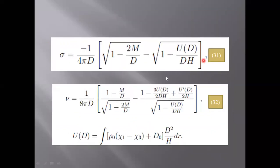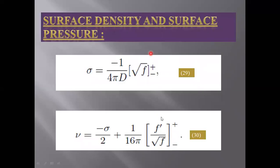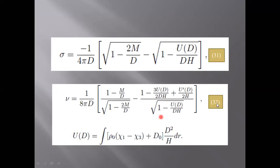By putting the values of these, we have found equations 31 and 32 which are our surface energy density and our surface pressure.